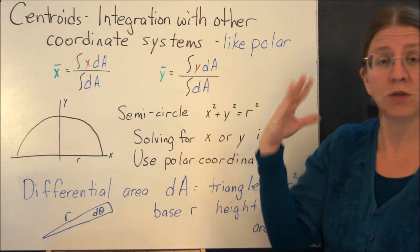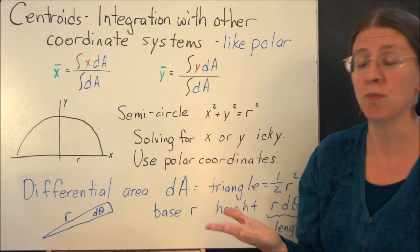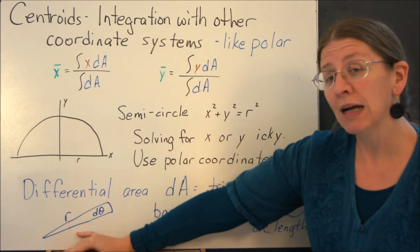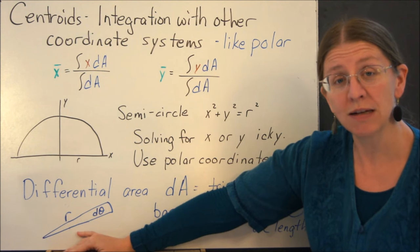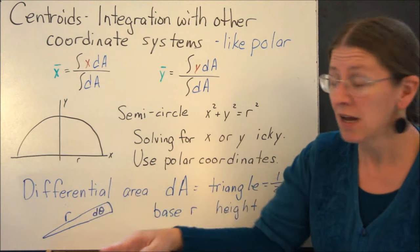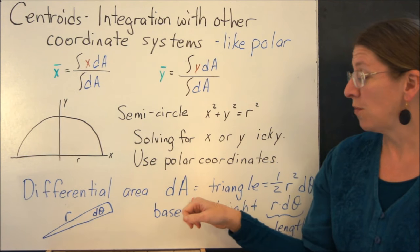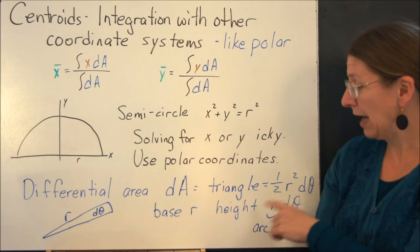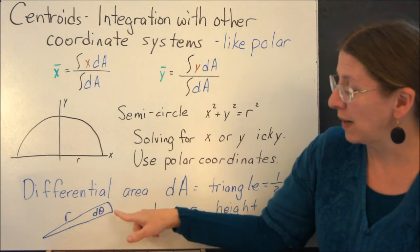So in polar coordinates, which is an example of a coordinate system that you might use, the actual differential area for a d theta slice is a triangle. So my differential area is actually one half base times height.